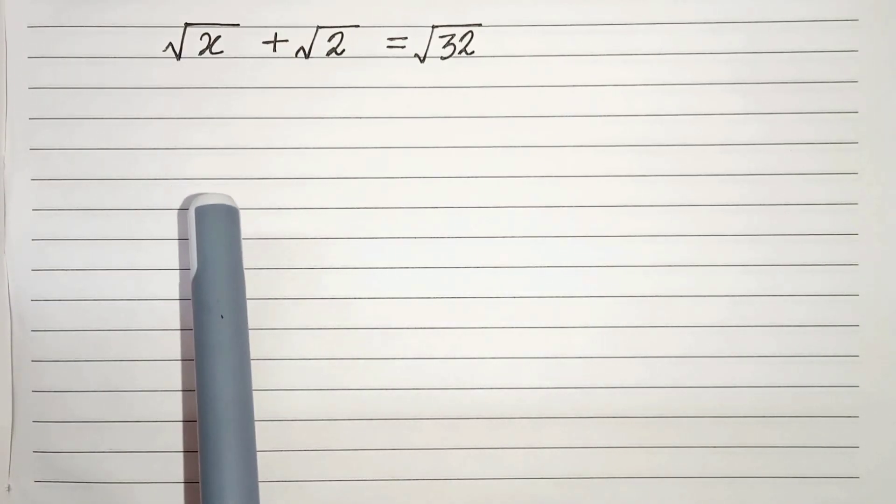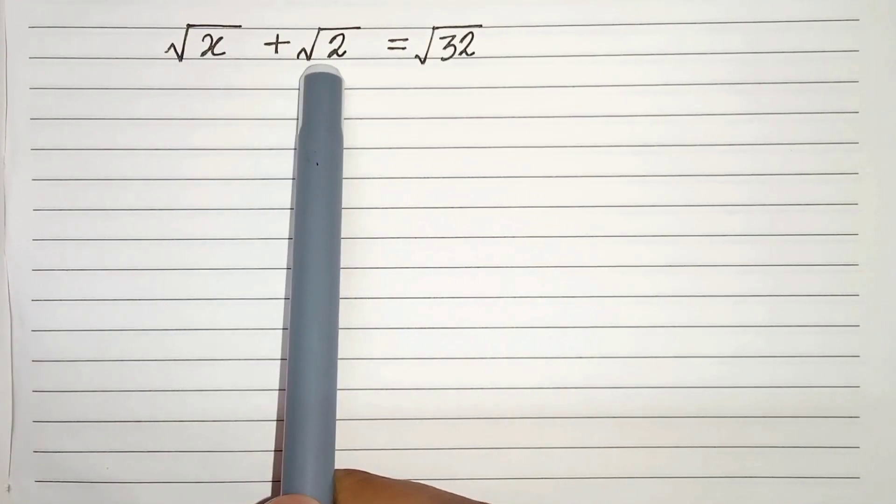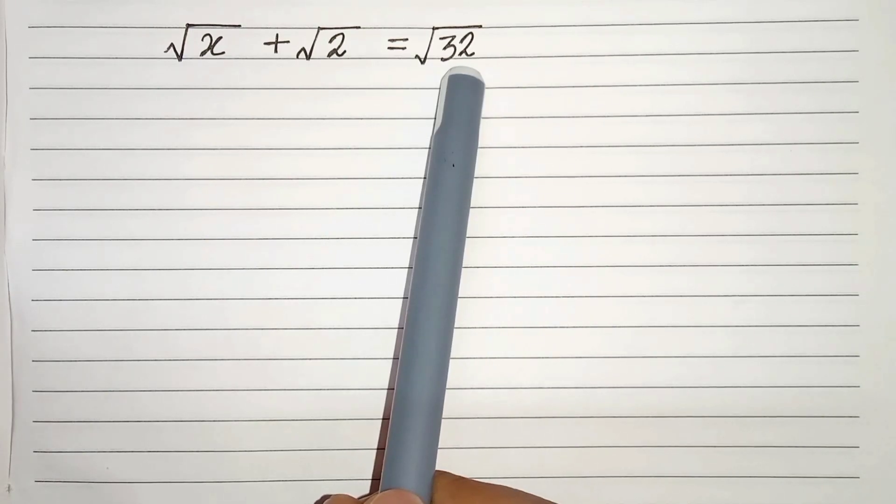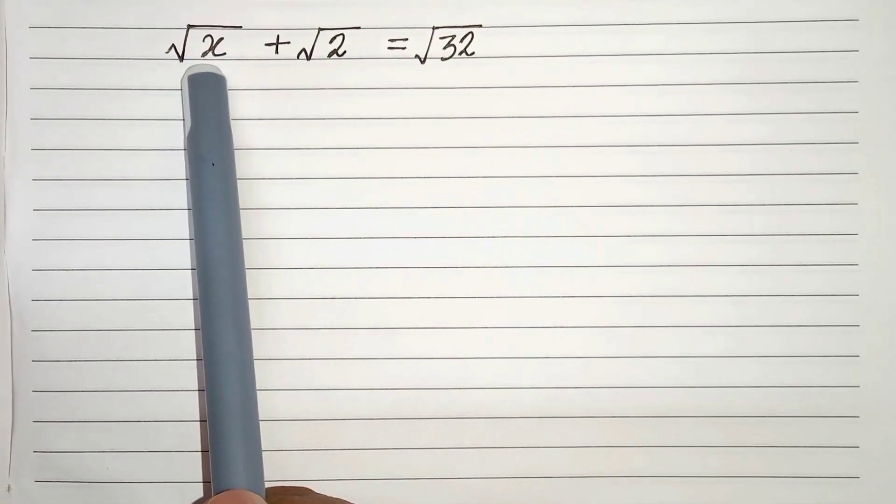Hello everyone. In this video we have √x + √2 = √32. We have to solve this and find the value of x. So let's start.